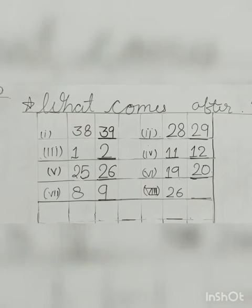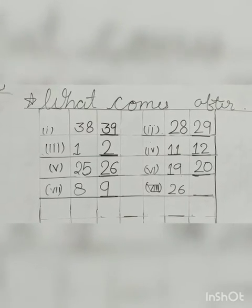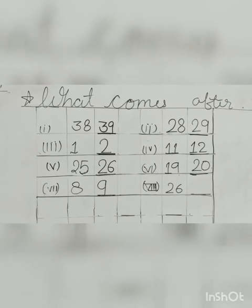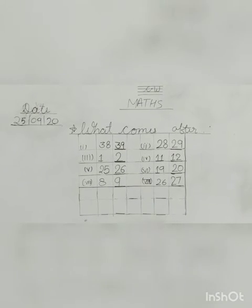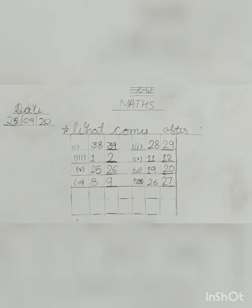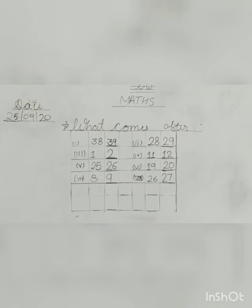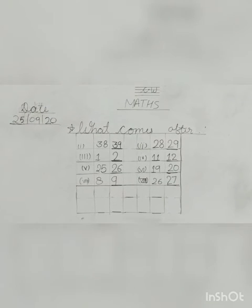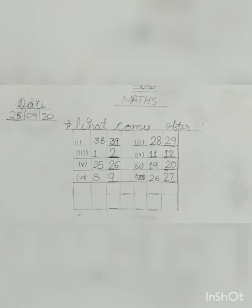The last one is 26. So what comes after 26? 27. So write 27 here. This way you have to do your work in your notebook. So kids, count and write — what comes after? Do it well.